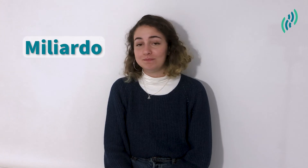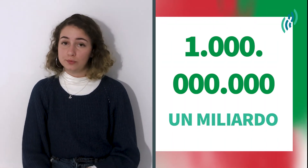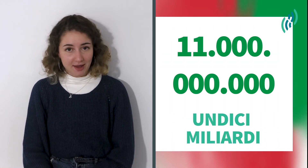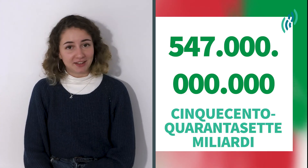Last up on our list is billions. Billion in Italian is miliardo. And you can use it the exact same way you use milione. So: un miliardo, undici miliardi, cinquecento quarantasette miliardi. That's a lot. And unless you actually need to say the exact number, you can just use the word for infinity in Italian — infinito.